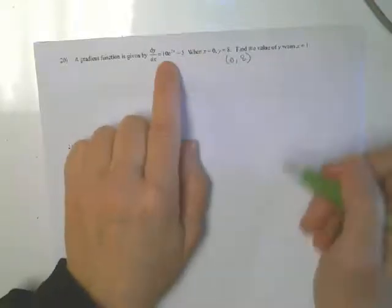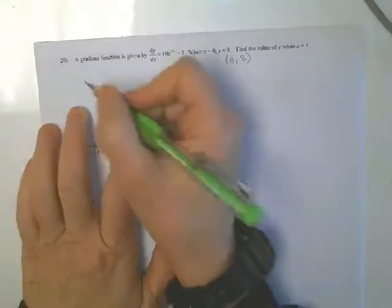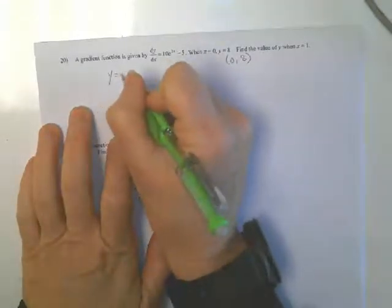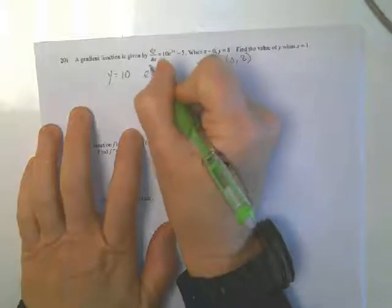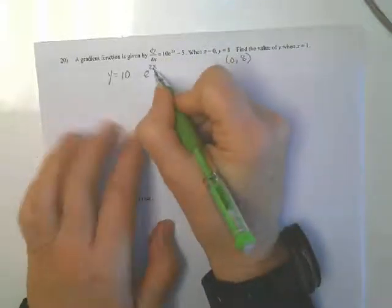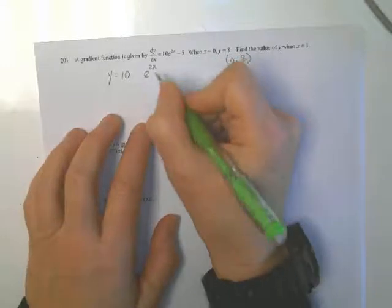So we want to find the antiderivative. So my antiderivative, I'm going to keep my 10. e to the 2x, the antiderivative is e to the 2x. But then we need to multiply by 1 half here.